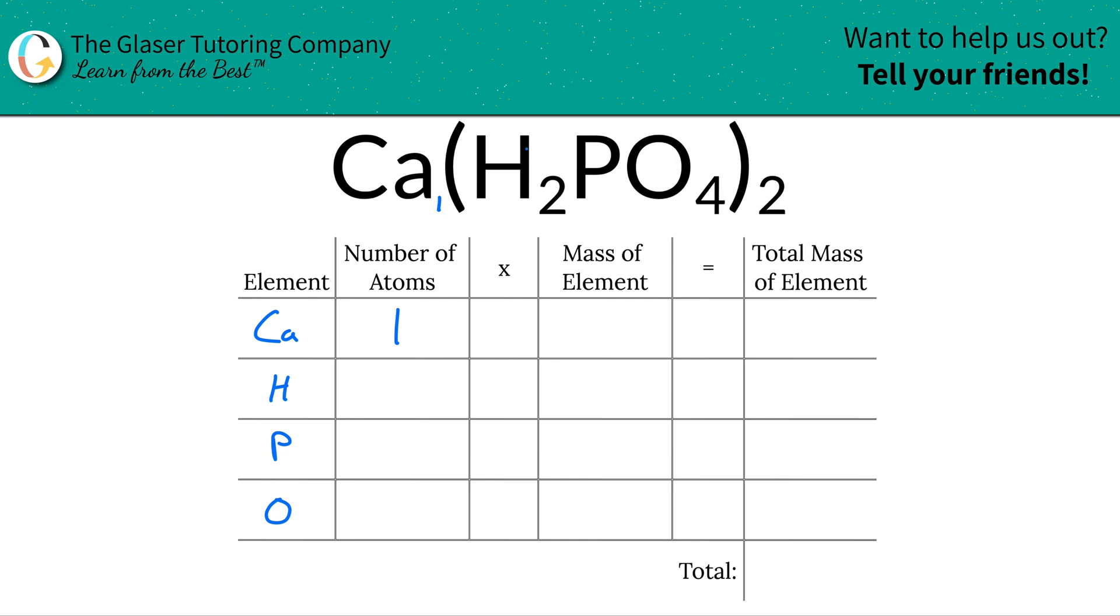Hydrogen now. In dihydrogen phosphate here, there are two hydrogens. But you don't have one dihydrogen phosphate, you have two of them. And therefore there would be four hydrogens in total. You take the subscript here of hydrogen and multiply it by the outside subscript for the dihydrogen phosphate. So that means there is four.